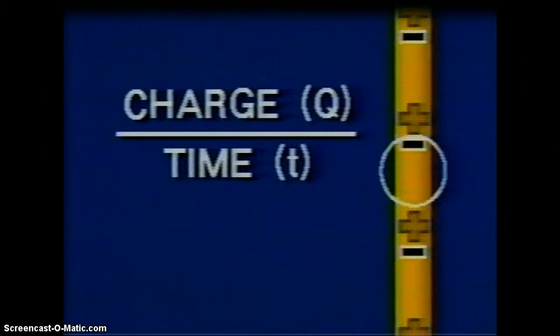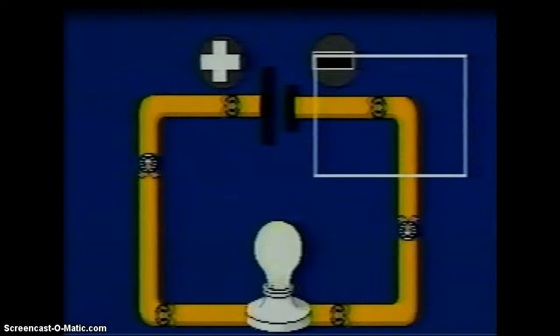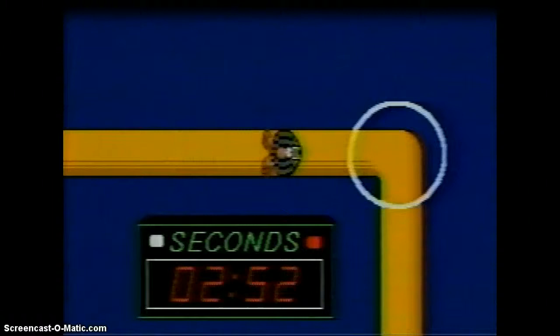We can also represent the dry cell like this. The electrical charge flows past a specific point in the circuit at a particular rate. This is called current and is measured in amperes. Since electrons are so very small, charge is measured in coulombs. A single coulomb of negative charge consists of 6.25 times 10 to the power of 18 electrons. When one coulomb of charge passes a specific point in the circuit each second, the current is 1 ampere.